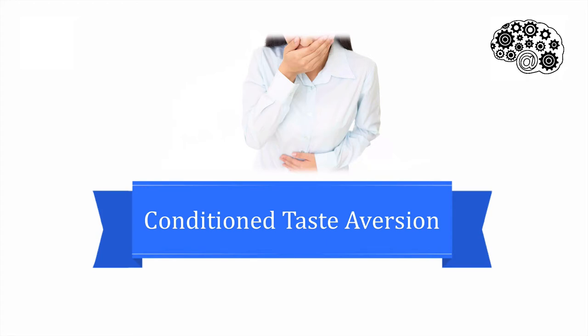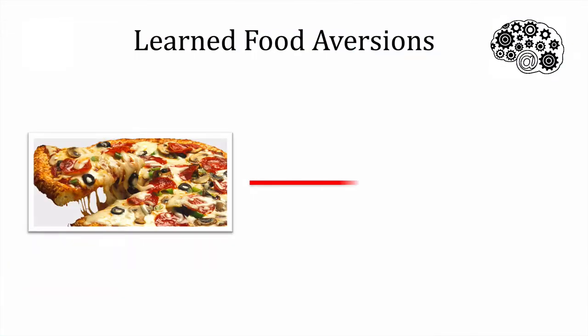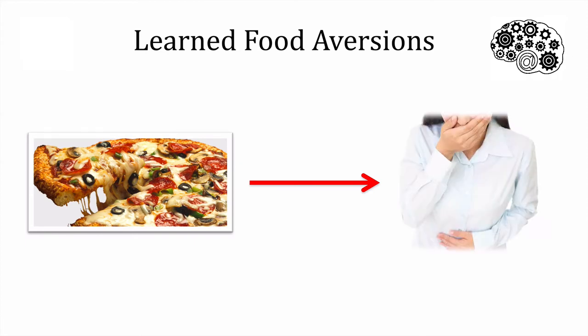Let's start with a real-life example. For many people, this pizza probably triggers thoughts of yumminess, but for other people, like Sherry, it provokes strong feelings of nausea. Why does Sherry feel this way about pizza? Many years ago, she had some pizza for lunch and later on that day suffered from a nasty stomach bug and ended up spending the next 24 hours in the bathroom. Even though it wasn't the pizza that caused this illness, she now has a lifelong aversion to it, and she hasn't eaten pizza since.